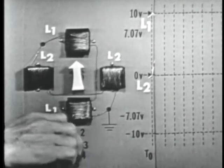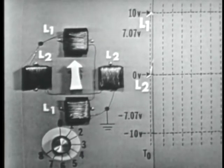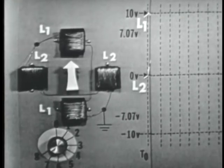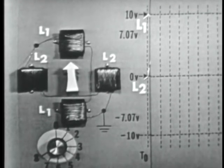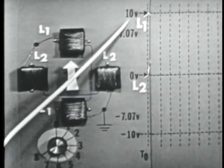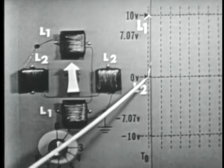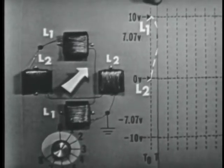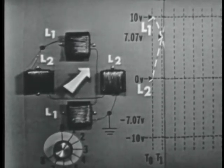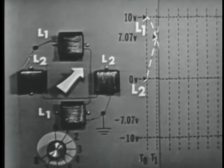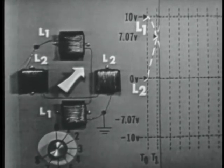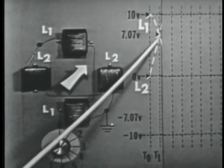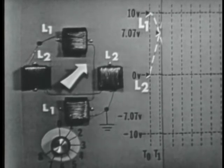At time zero the pointer indicates zero degrees pointing straight up — only L1 has voltage applied, positive 10 volts; L2 has no voltage applied. At time one the pointer indicates 45 degrees, meaning both coils have voltage applied. The voltage on L1 has dropped to 7.07 volts and the voltage on L2 has risen to 7.07 volts. At time two the pointer shows only L2 has voltage applied — at maximum positive 10 volts, and L1 is at zero volts.